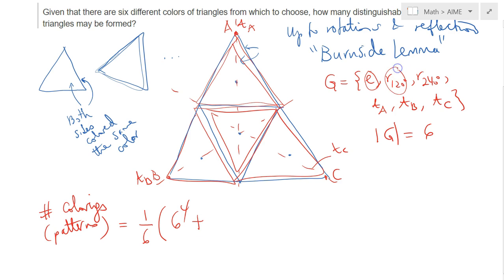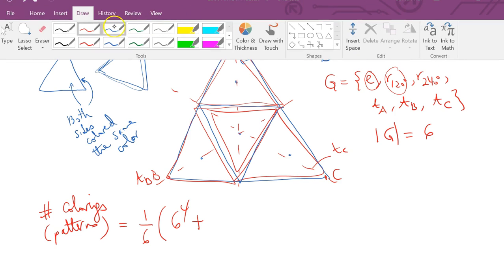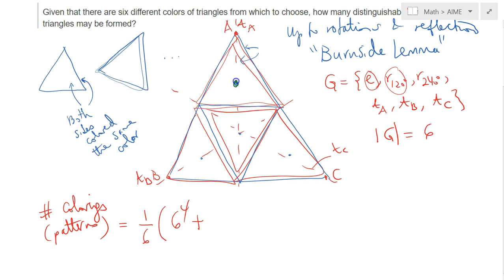What is the fix of the 120 degree rotation? After a 120 degree rotation, we realize that this one here will move to here, and this one will move to here, and this equilateral triangle will move to here. So we have one cycle here, and the one in the middle will remain there. In total, we have two cycles, meaning 6 squared plus.